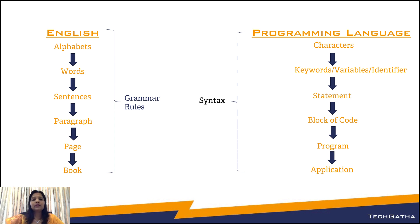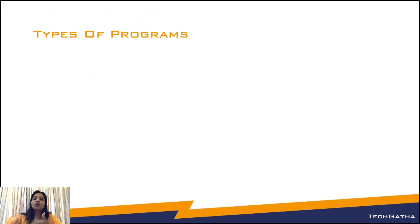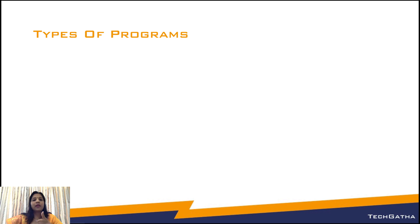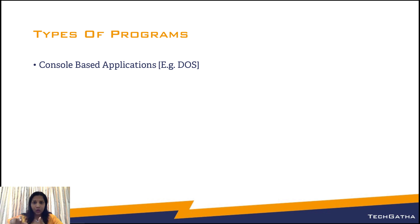Once you understand why it is called a language, with any programming language that you learn, you will be able to create four types of programs. One is console-based applications — for example, command prompt in Windows or terminal in Mac machines. These applications understand character user interface; they don't have any graphical user interface. So you don't use a mouse, but instead you type from the keypad to interact with these software.